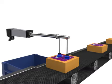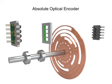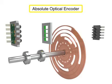Absolute encoders are used in many applications that require speed, position, angular displacement, and directional feedback. An encoder is a device that converts linear or rotary movement into digital or pulse signals. The most common type of feedback device is the absolute optical encoder.